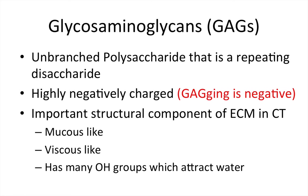Glycosaminoglycans are unbranched polysaccharides made of repeating disaccharides — two sugars that repeat over and over — and that's a GAG. They're highly negatively charged. A mnemonic: a gagging patient is a negative experience. GAGs are important structural components of the extracellular matrix in connective tissue. They have many hydroxyl groups that attract water, giving them a mucus-like or viscous consistency — they're kind of sticky.